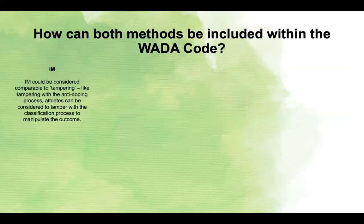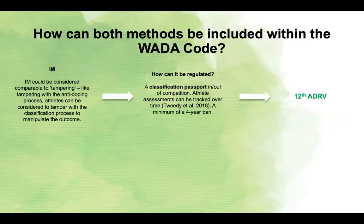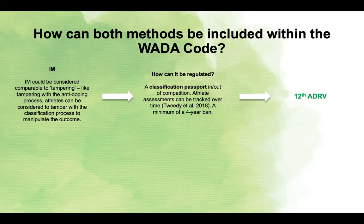So how can these methods be included within the WADA code? With intentional misrepresentation, as stated previously, it is comparable to tampering with the anti-doping process, and para-athletes can tamper with the classification process to manipulate the outcome. One way this could be regulated is through a classification passport, in or out of competition, where athletes' assessments are tracked over time to identify any significant changes. A four-year ban could then be implemented, like doping. In the future, IM could potentially become the 12th anti-doping rule violation.